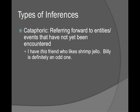Cataphoric inferences are forward-looking, and much harder to process because the reference hasn't happened yet. You have to hold onto that representation until you hit the disambiguating region. For example: 'I have this friend who likes shrimp jello. Billy is definitely an odd one.' 'This friend' refers forward to Billy.